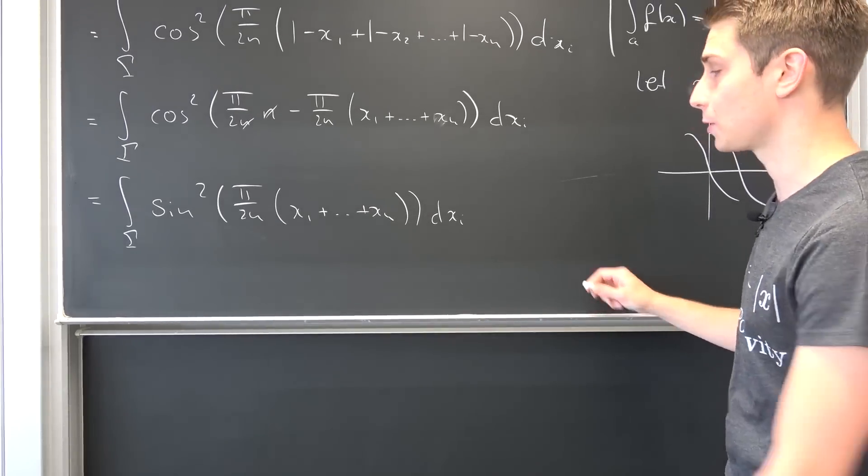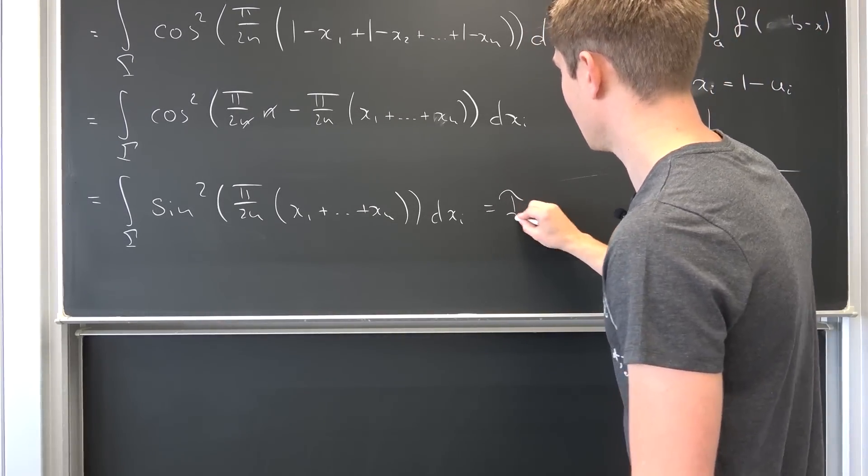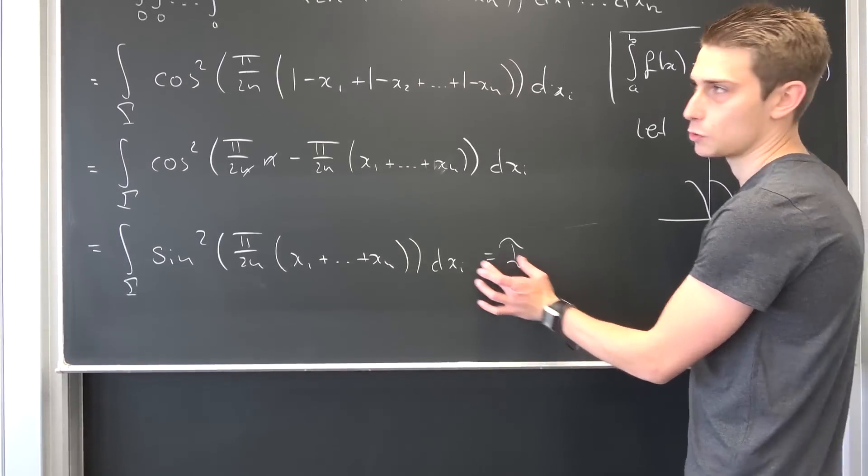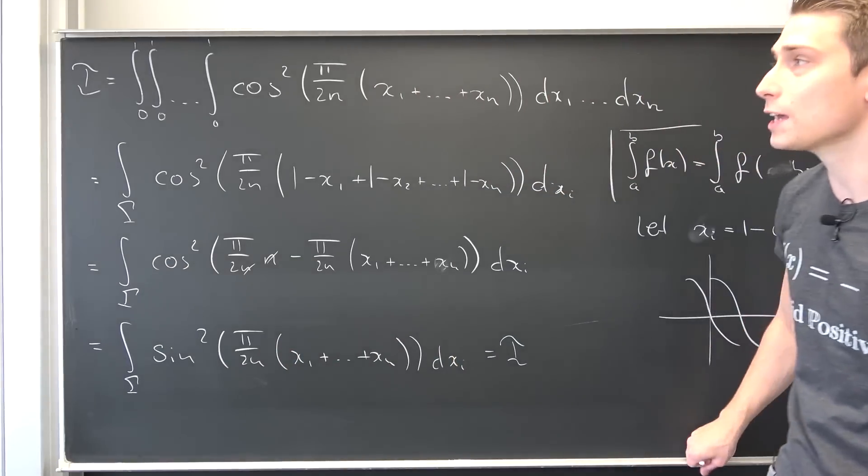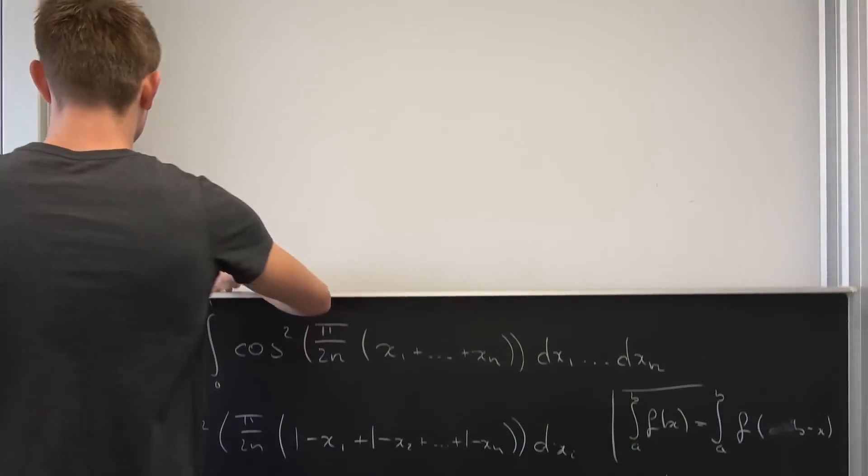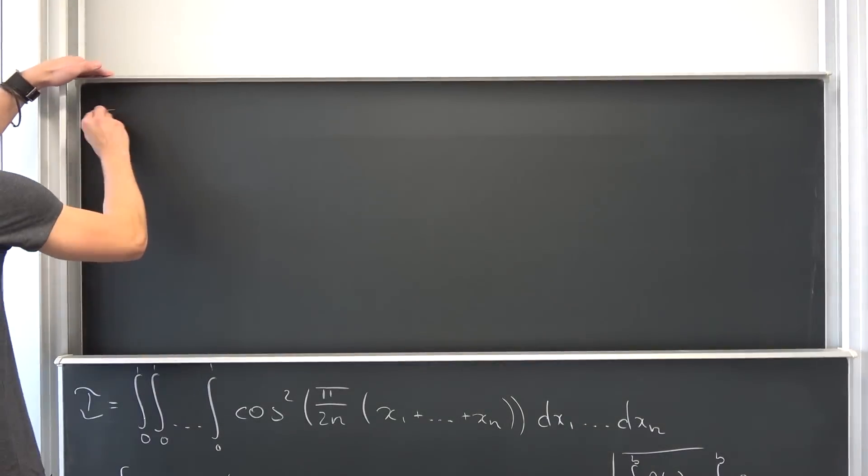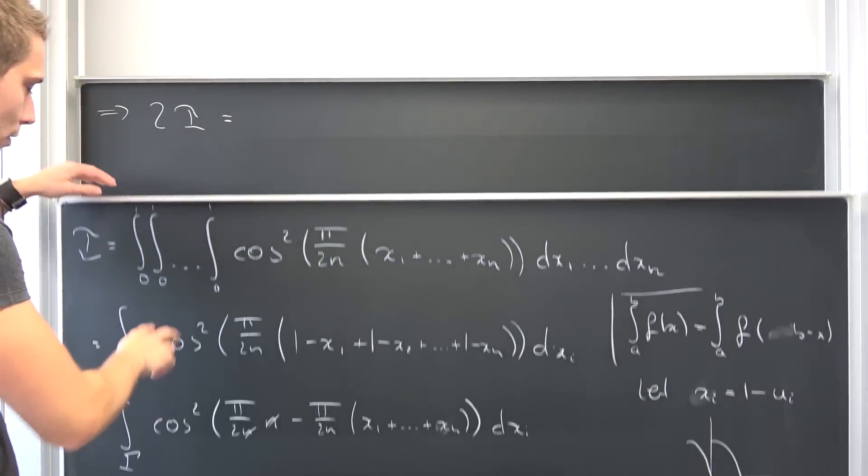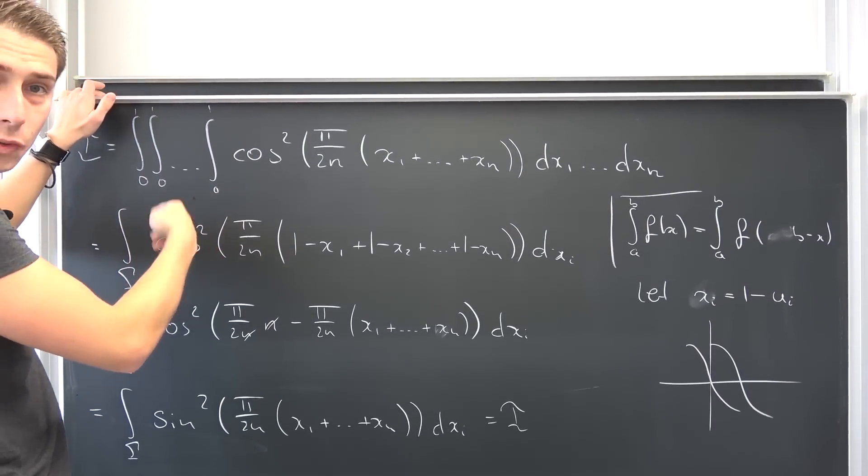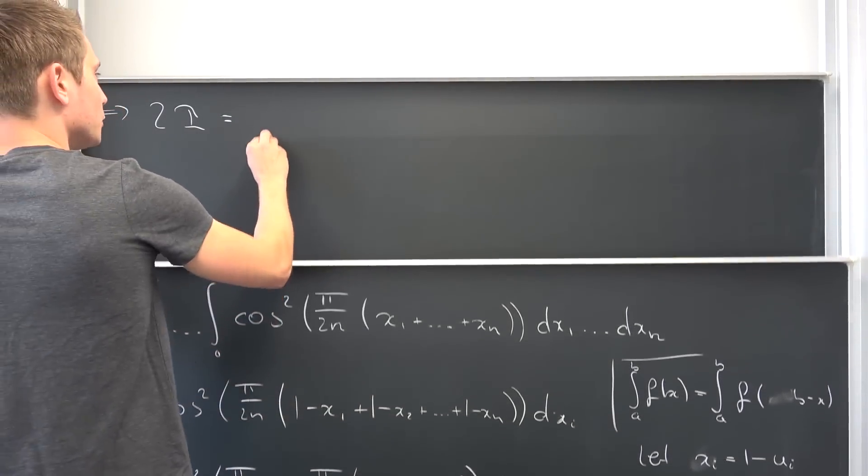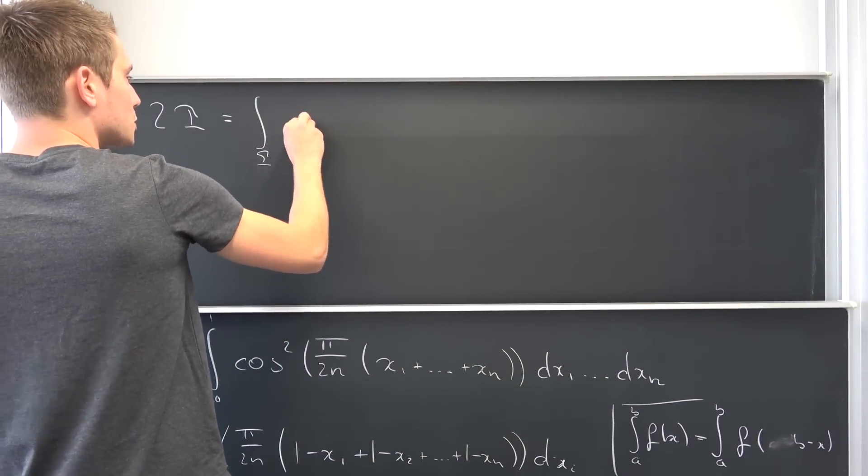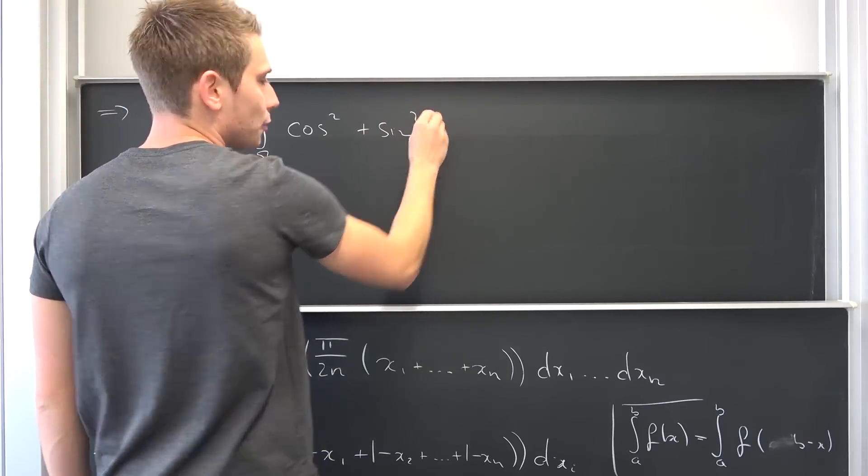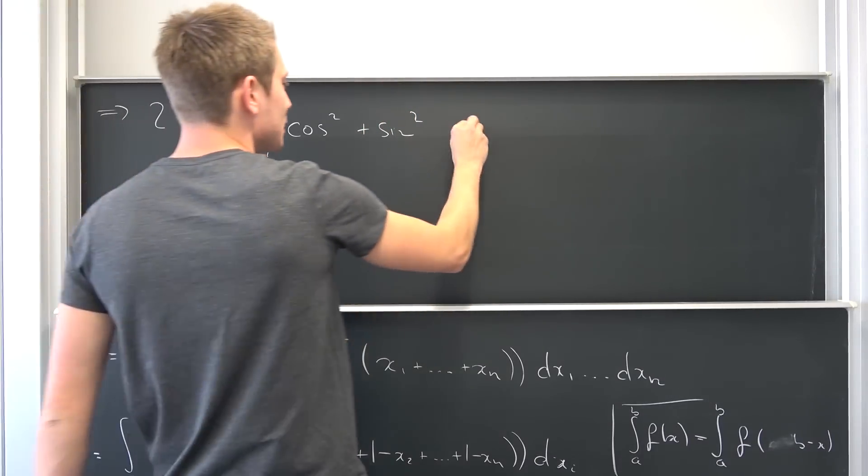Now, we came pretty far because this thing is still our i. And here comes principle of dummy variables in yet again. Why not add our integral i to our original integral i? Leaving us with 2 times i being equal to all the integrals ranging from 0 to 1. So we can use the linearity of the integral and stay in the same region.